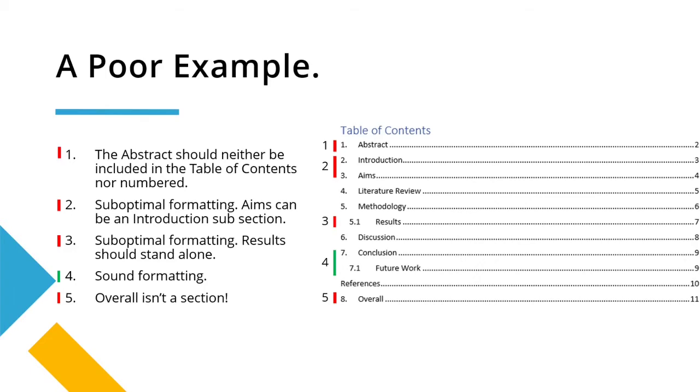Start with number one. The abstract should neither be included in the table of contents nor should it be numbered. So the abstract shouldn't be in the table of contents and it shouldn't have one before it. This is something you don't really get told when it comes to the formatting of academic or university work. It's just something you have to pick up on. But now you've seen this mistake happen in this exemplar, hopefully you won't make it too.